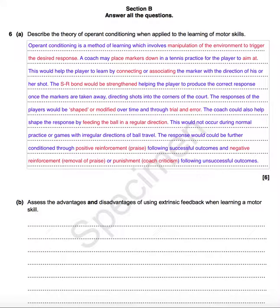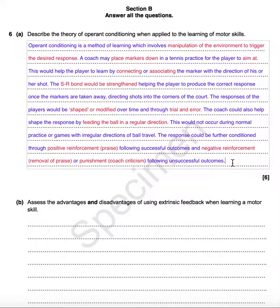The response could be further conditioned through positive reinforcement — that's about praise — following successful outcomes, and negative reinforcement, which is removal of praise, or punishment. This could be coach criticism following unsuccessful outcomes. You'll see that with the exception of a couple of lines, every line that I've written has a marking.